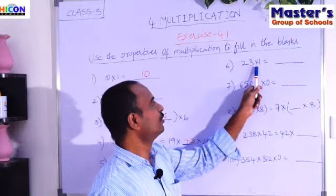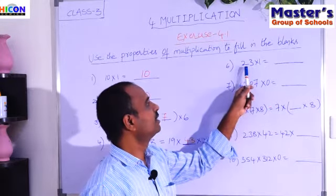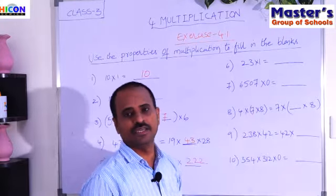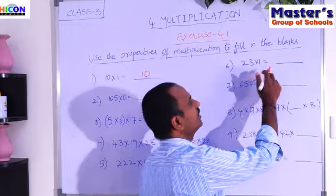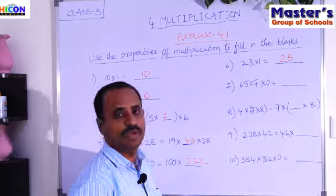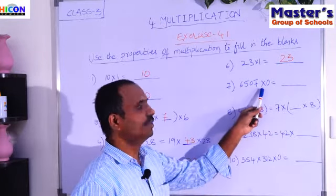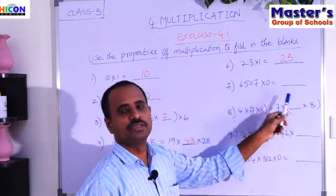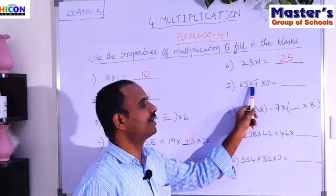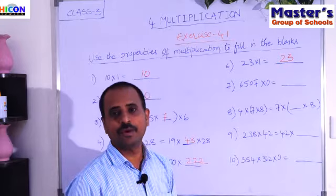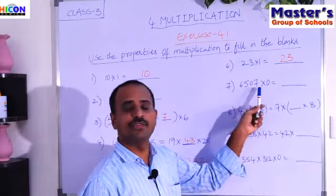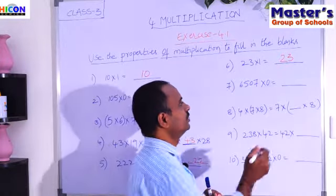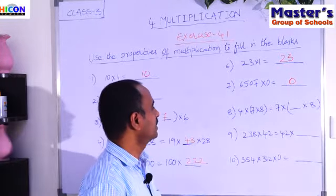Sixth blank: 23 × 1 = __. The number 23 is multiplied with 1. According to properties of multiplication, if any number is multiplied with 1, we get the same number. So 23 × 1 = 23. Seventh blank: 6,507 × 0 = __. The number 6,507 is multiplied with 0. If we multiply any number with 0, we get 0. So the answer is 0.